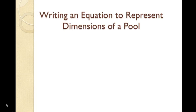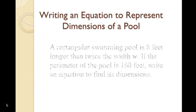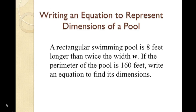We can also write an equation to represent a word problem. In this example, a rectangular swimming pool is 8 feet longer than twice the width, w. If the perimeter of the pool is 160 feet, write an equation to find its dimensions.